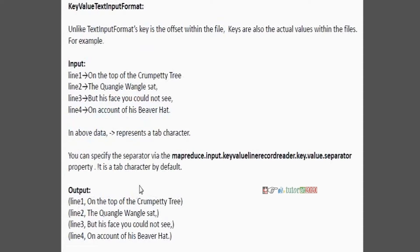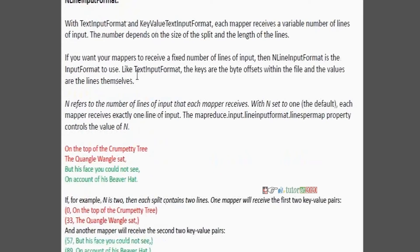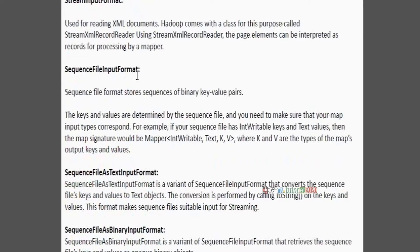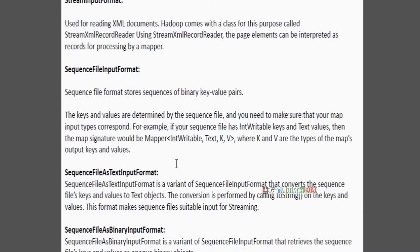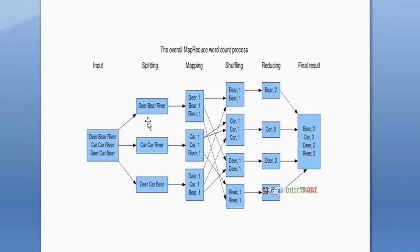We have other formats as well. For key-value text input format, keys and values are decided automatically according to the input format. For the sequence input format, keys and values are determined by the sequence file. You need to make sure that your map input type corresponds to the value. Depending on the input format, the mapper reads the data and keys and values are decided.